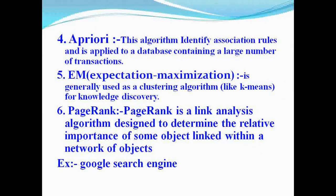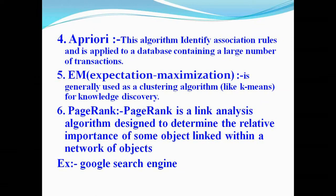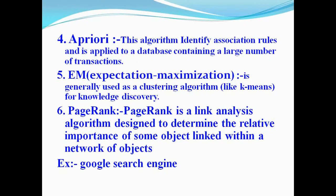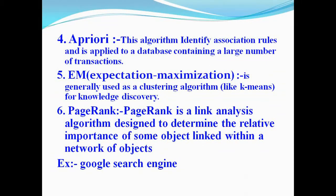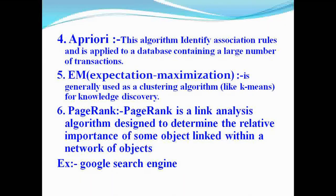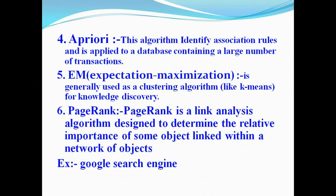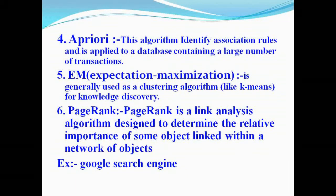PageRank is a link analysis algorithm designed to determine the relative importance of objects linked within a network. For example, when searching for information in Google, it searches related data and displays it page-wise. For a huge amount of data matching a query, it divides into pages ranked by importance — this is the PageRank algorithm used in the Google search engine.